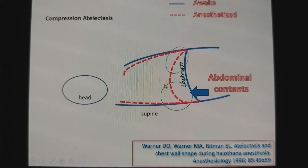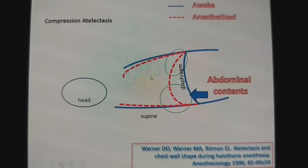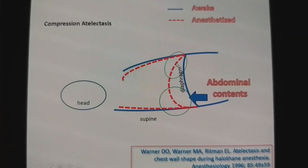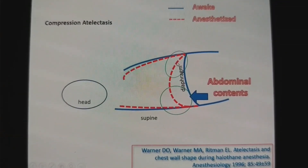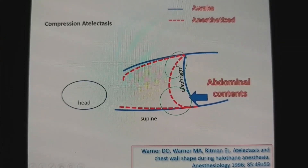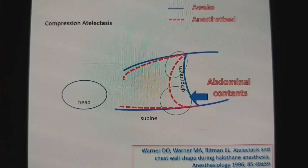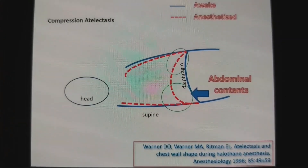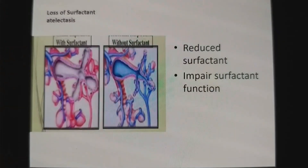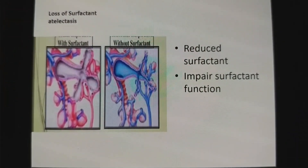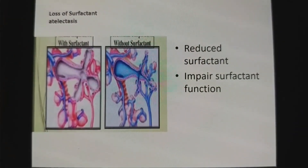Ventilation is high in the upper non-dependent part but perfusion is less there. This again leads to ventilation-perfusion mismatch and shunting of blood.